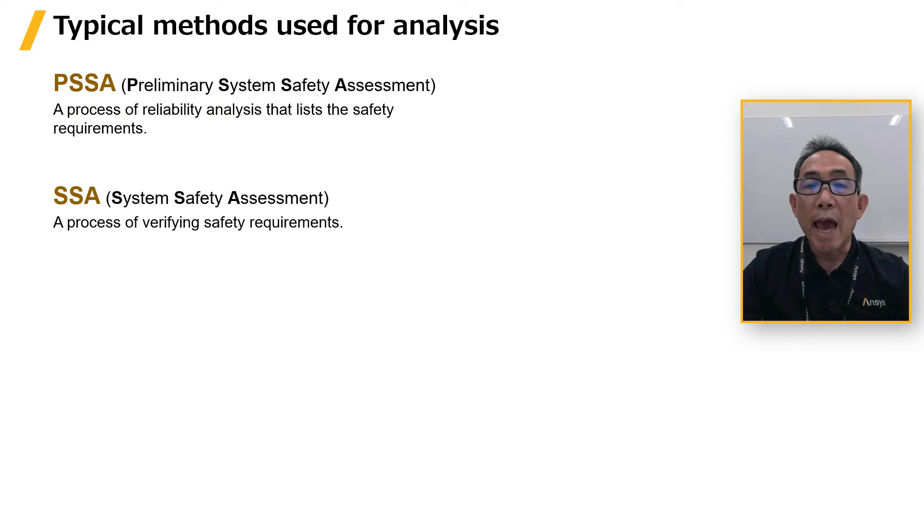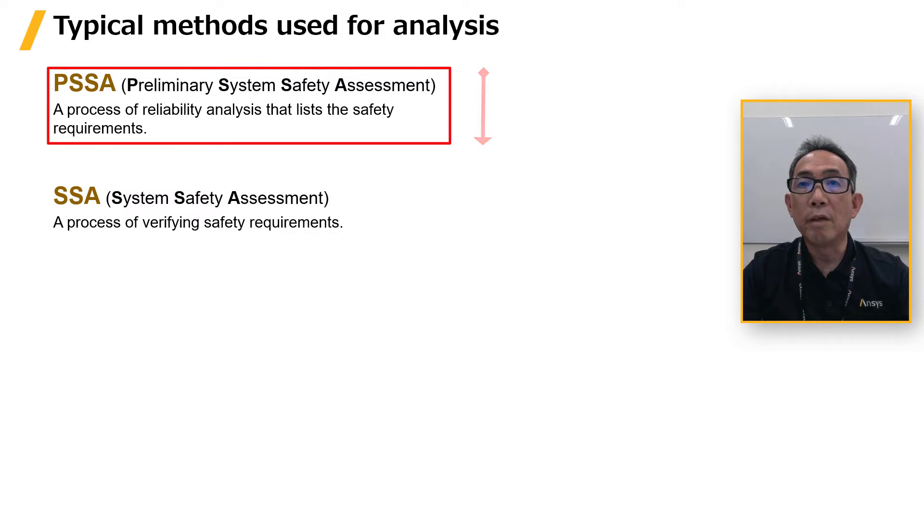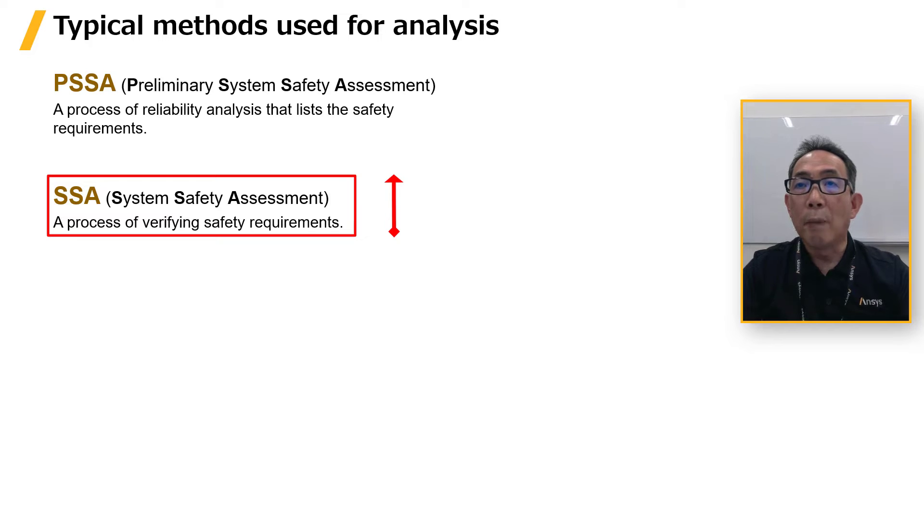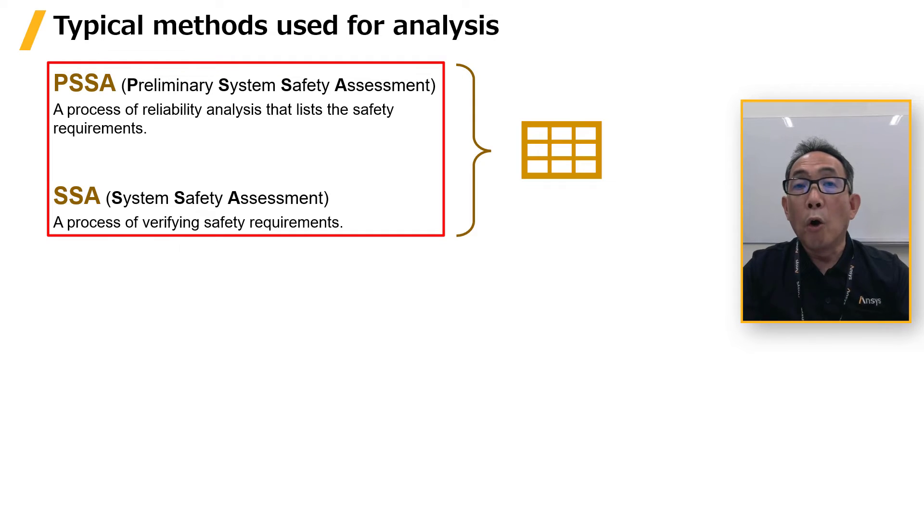Both PSSA and SSA are processes that address aircraft safety requirements. While PSSA is a top-down process to break down the safety requirements, SSA is a bottom-up process to validate the safety requirements. The analysis is performed using the tabular form or goal notation.